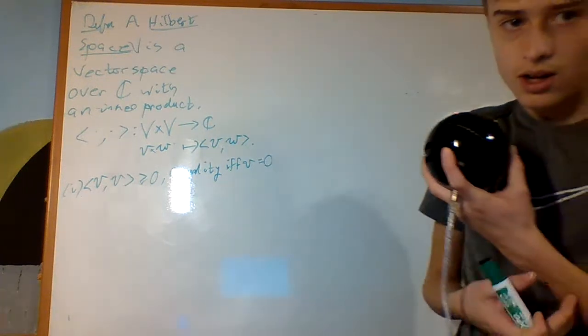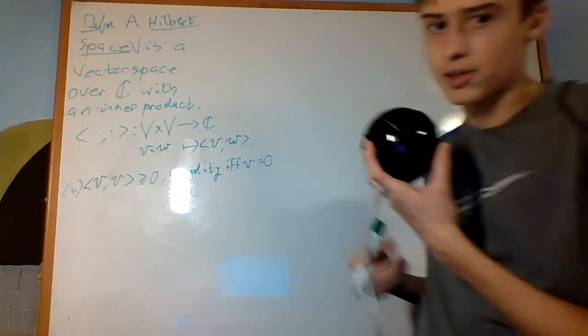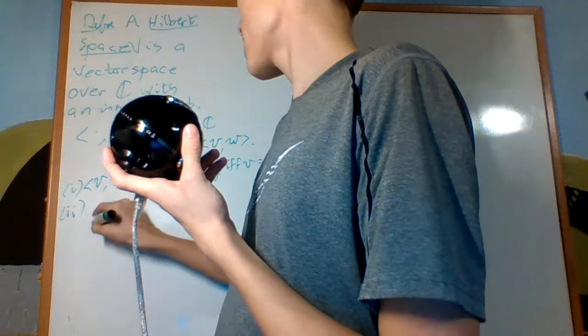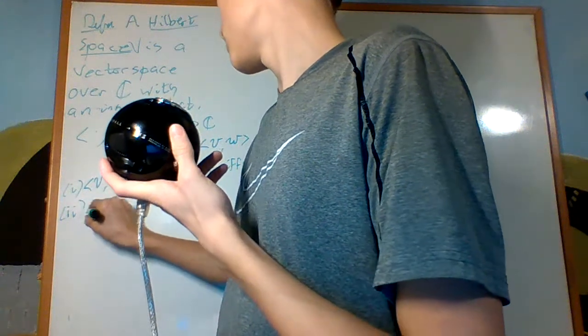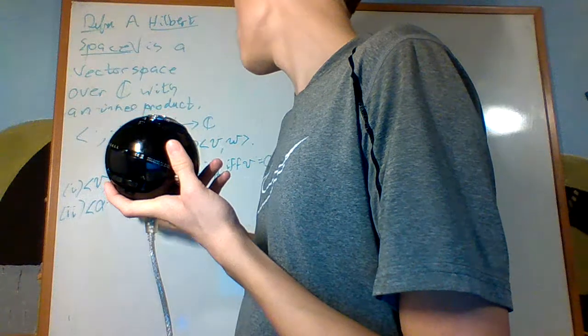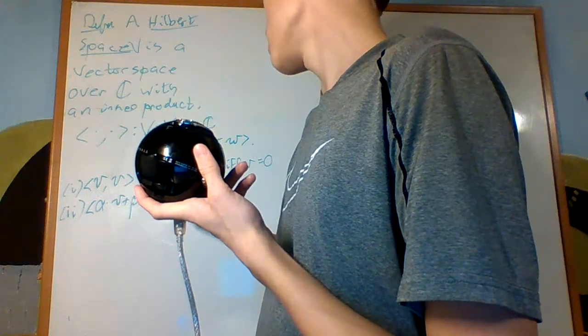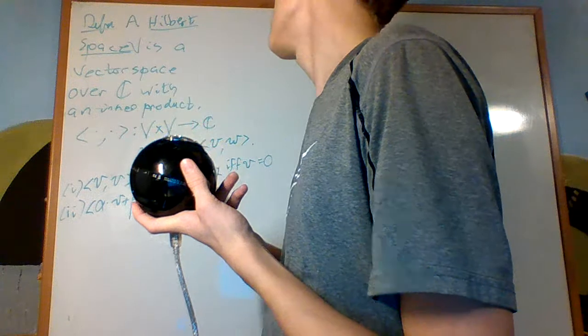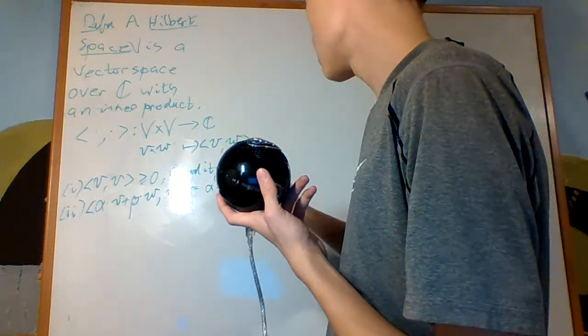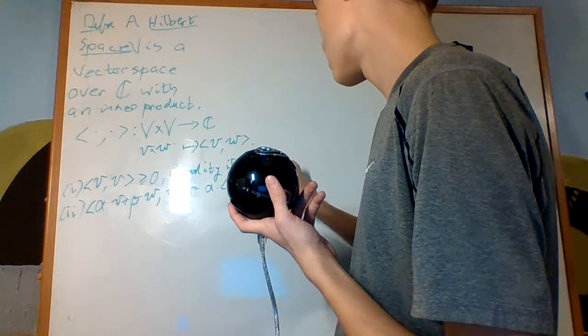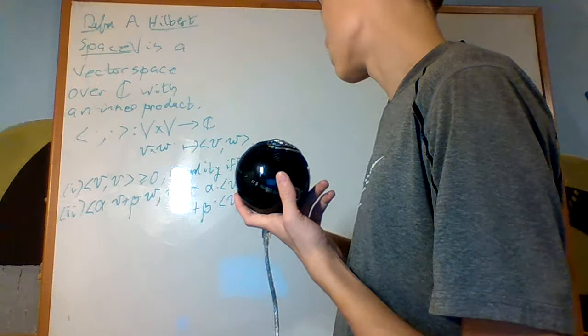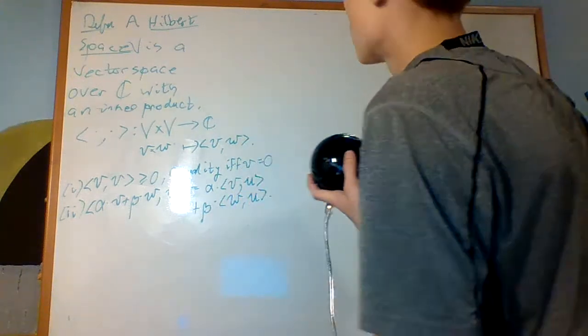It'll also have the property that alpha times V plus beta times W inner product with U is equal to alpha times the inner product V with U plus beta times the inner product W with U.